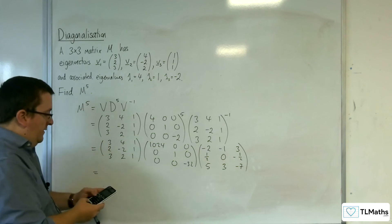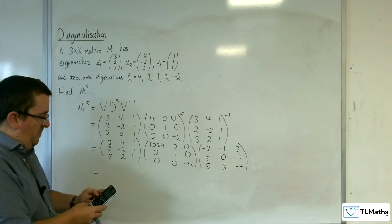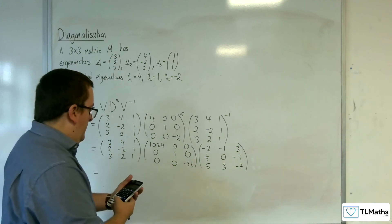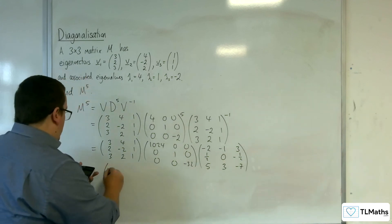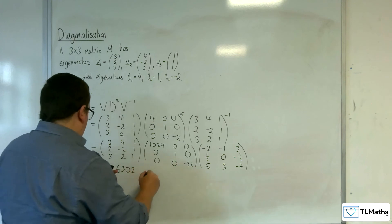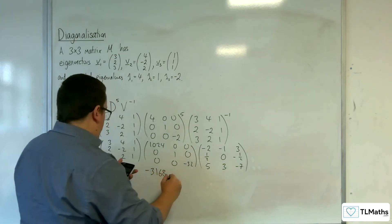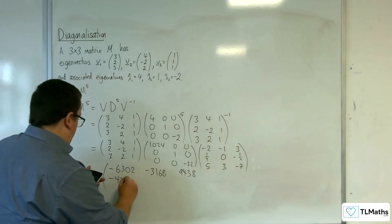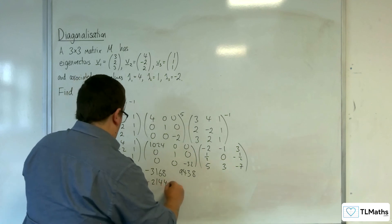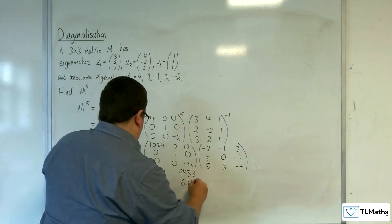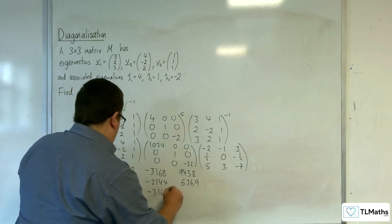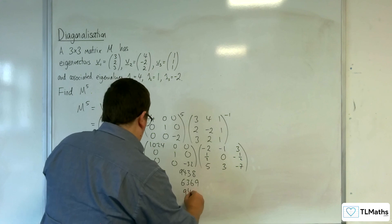So then I can tell my calculator to do matrix A times matrix B times matrix A to the minus 1. And we get minus 6302, minus 3168, 9438; minus 4257, minus 2144, 6369; minus 6303, minus 3168, and 9439.